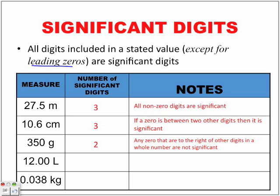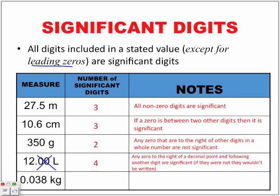Here's where things get a little tricky: 12.00 liters. The answer is four significant digits. Any zero to the right of a decimal point and following another non-zero digit is considered significant. If they were not significant, they wouldn't be written. Technically I can cross them out and my answer still represents 12 liters — the value doesn't change. So I put those zeros because I want to make them significant, to make a significance out of those numbers.